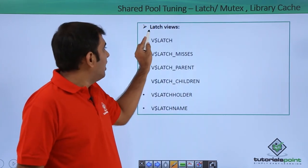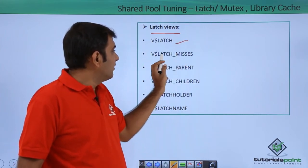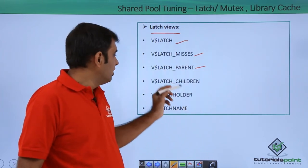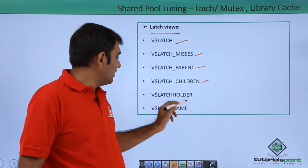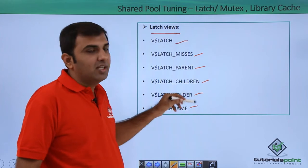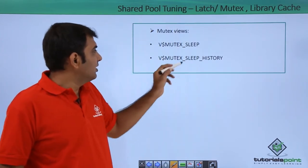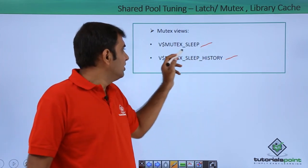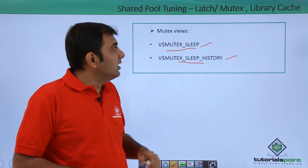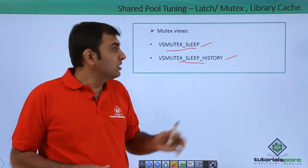To check latch information, you can use the views: V$LATCH, V$LATCH_MISSES, V$LATCH_PARENT, V$LATCH_CHILDREN, V$LATCH_HOLDERS, and V$LATCH_NAME. For mutex information, you can use V$MUTEX_SLEEP and V$MUTEX_SLEEP_HISTORY. Let's see practically how to view latches and mutex information under the library cache using these data dictionary views.